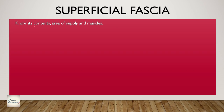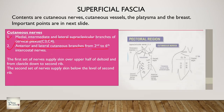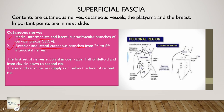In the superficial fascia, you should know about its contents, area of supply, and some muscles. After the dissection of the skin, the main important structures are seen in the female body in this region. The supraclavicular nerves cover the region from the clavicle down to the second rib, and the anterior and lateral cutaneous branches extend into the intercostal nerves and they supply the skin down to the second rib.